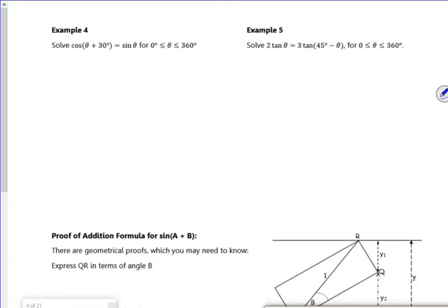Are you ready for more of this? It's quite nice this stuff. Right, so I'm using cos(A + B), so I'm using the formula, so that's cos A cos B minus sin A sin B. So I've got cos theta cos 30 minus sin theta sin 30 is equal to sin theta.